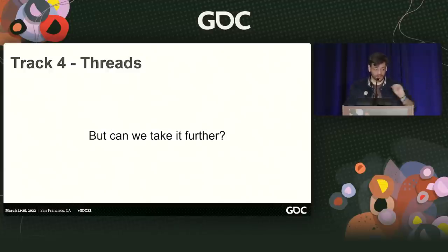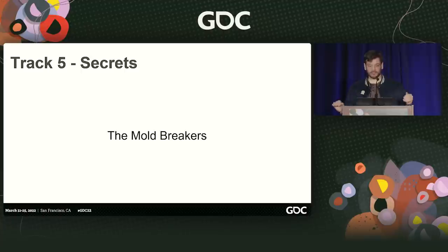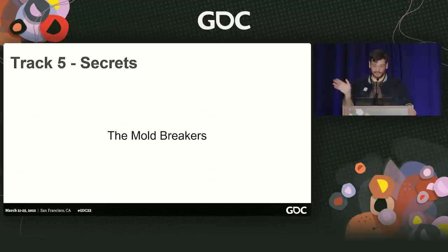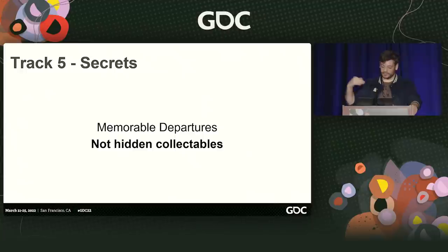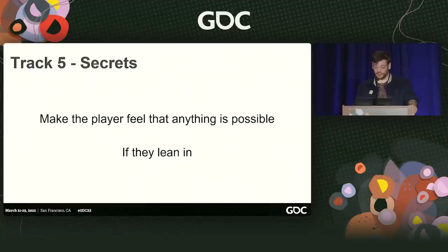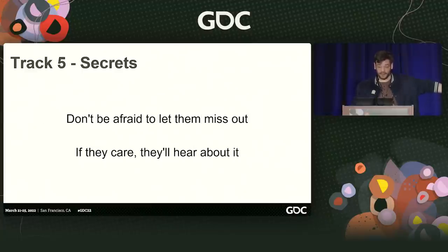Can we take it further? How do we ratchet this up to 11? How do we make these moments really stick out? That's where we get to secrets — these are the mold breakers. Threads build off of prospects: you think you know what you're getting into, and we give you 50% more. Secrets just catch you by surprise. This is stuff that does not follow a pattern, does not sit with what the player's expectation is — and it's how you make something memorable. They're memorable departures. These aren't hidden collectibles — these are twist on twist on twist. It makes the player feel like anything's possible if they lean in. These are not the focal points — do not be afraid to let the player miss them. These need to be big and interesting but completely optional, not part of the story.